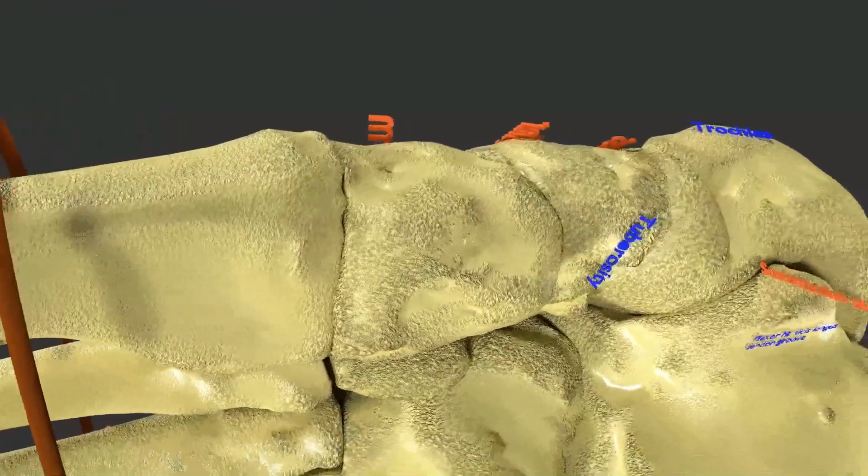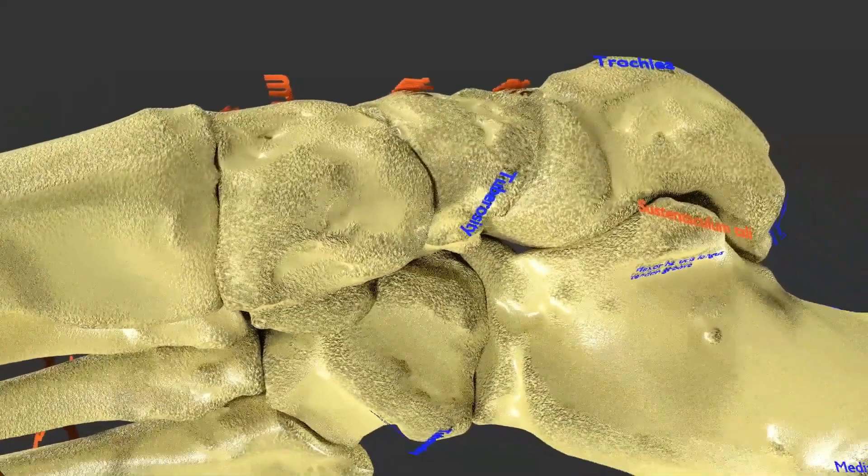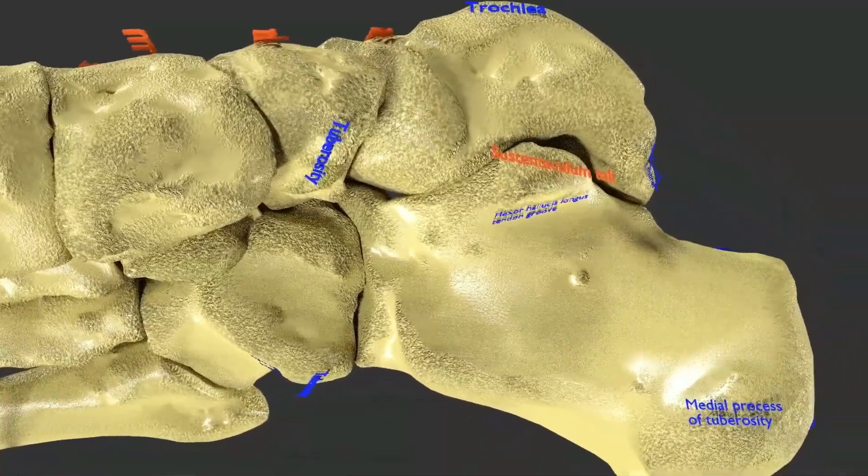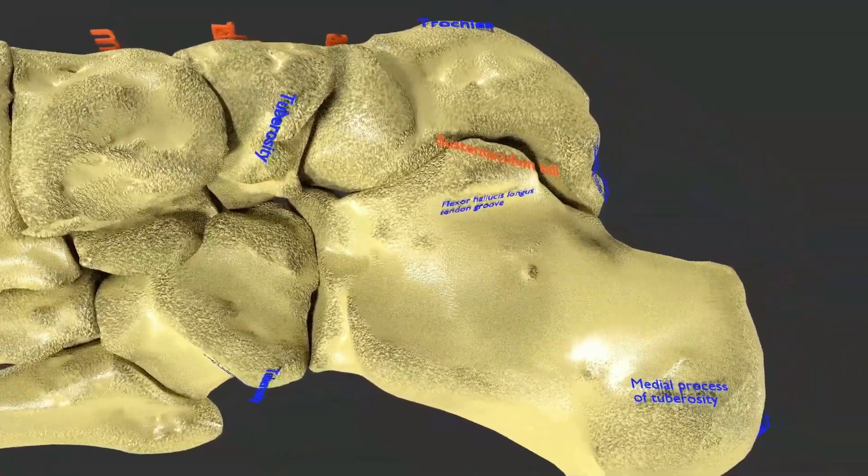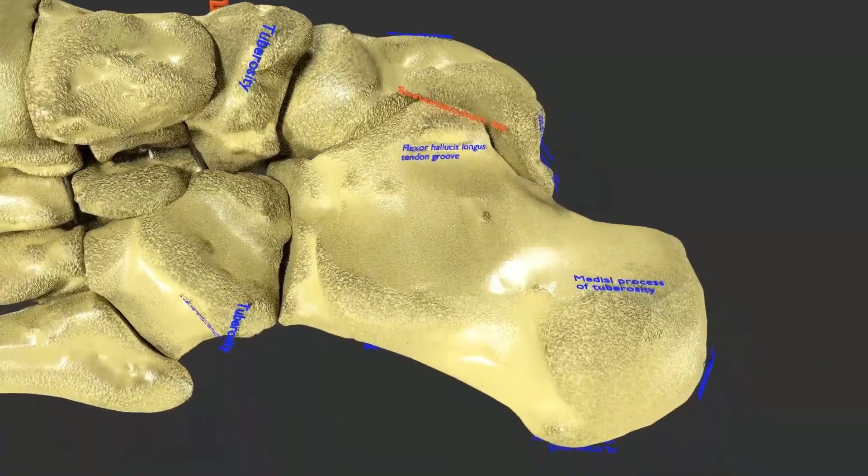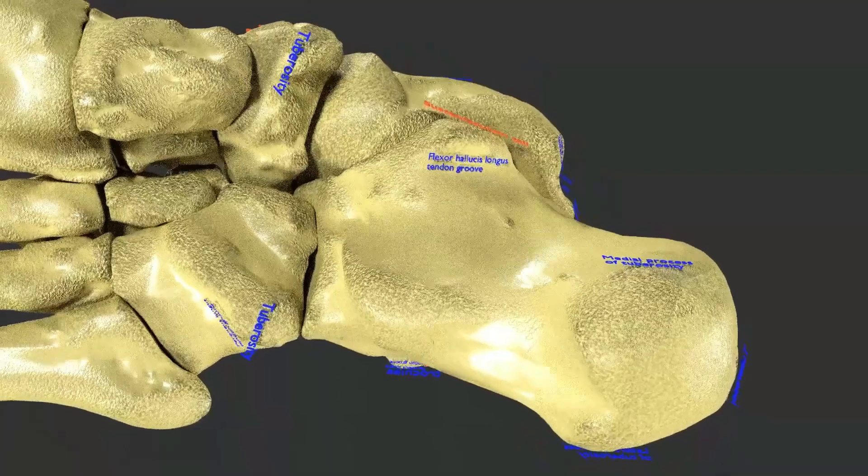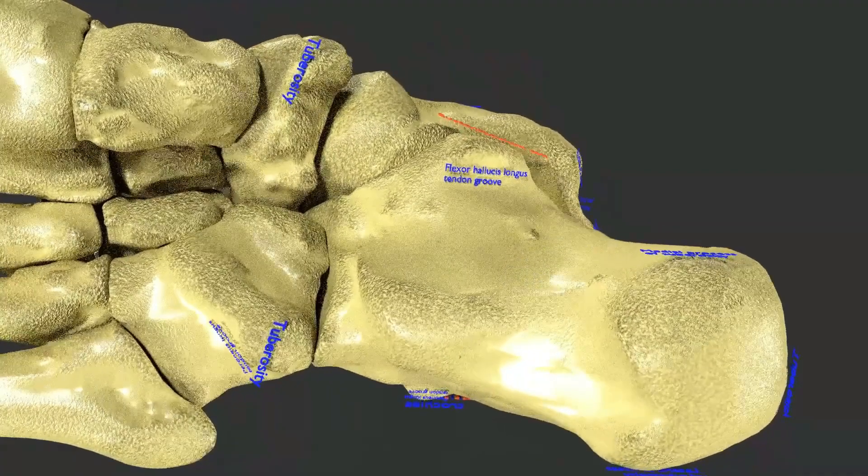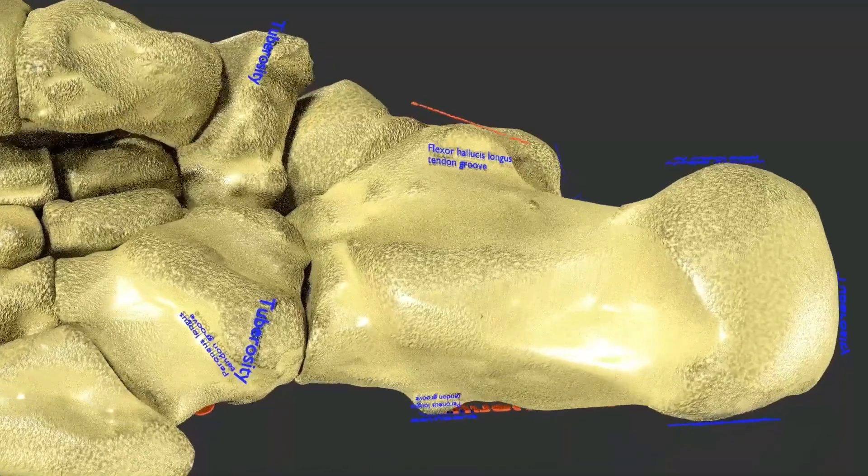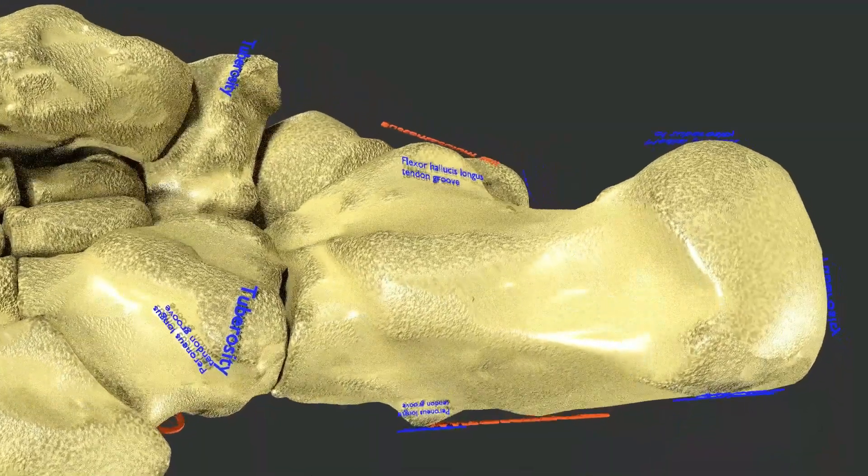In this view you see the sustentaculum tali with flexor hallucis longus tendon and medial process of tuberosity of calcaneum. This flexor hallucis longus tendon helps you flex your big toe and stand on the tips of your toes. Overuse of this tendon can cause inflammation called tendonitis.